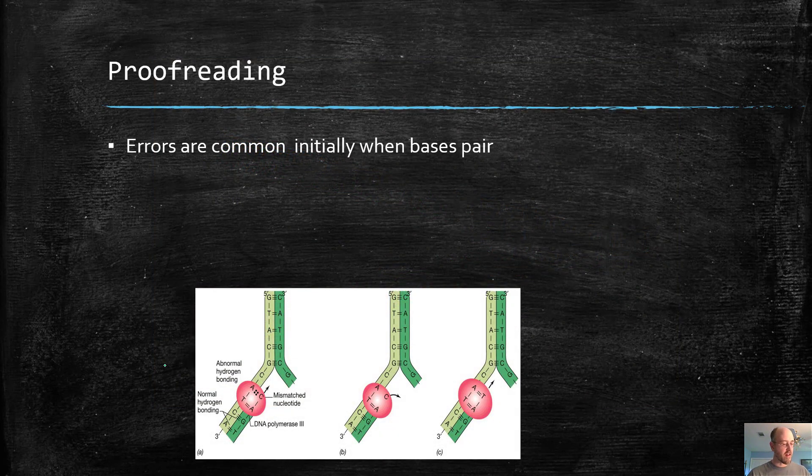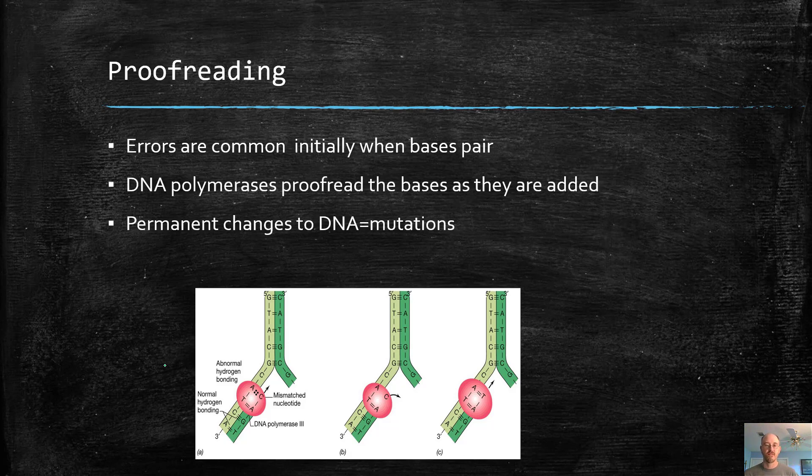Now, another thing that happens during DNA replication are errors. Errors are actually quite common when we're pairing up bases. So if we have a G here and we accidentally put an A here, they might kind of stick, but they don't stick really well and it could cause an error. So DNA polymerase, both of them, one and two, have a proofreading capability. They check their work, just like you should do. And then they tend to fix it.